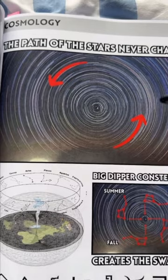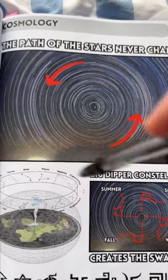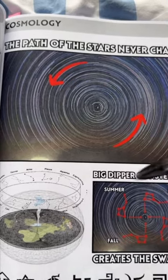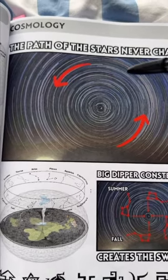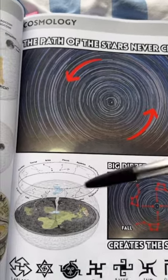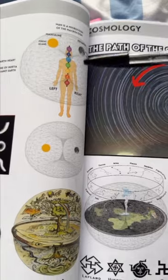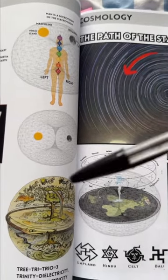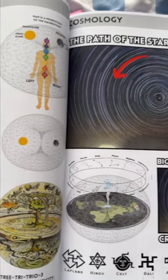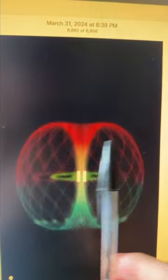The constellations are fixed and they rotate around us, creating a giant clock. The sun tells the time of day, the moon tells the month — the moonth — and the stars tell the year.